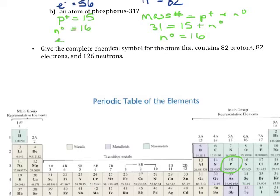The last thing we need to look at are the electrons. Again, since no charge was given, we know that the electrons must equal the protons, because in a neutral atom there are the same number of protons and electrons.